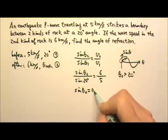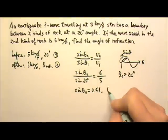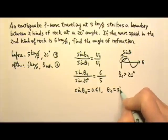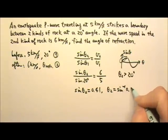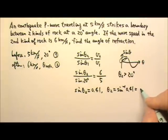we'll find this to be 0.41, that means theta 2 is inverse sine 0.41, which gives us 24 degrees, which is indeed bigger than 20 degrees.